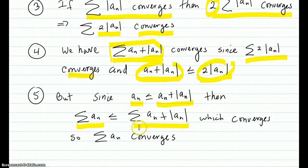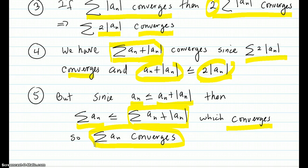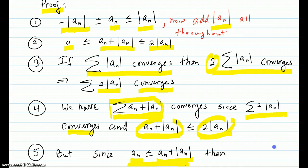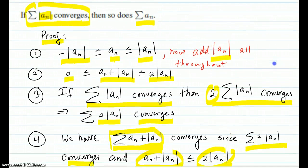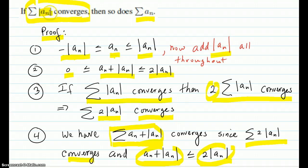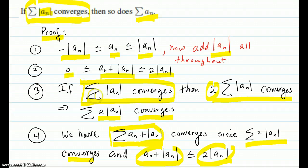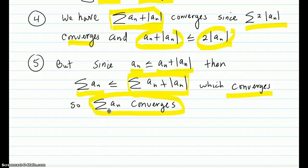By comparison, that means the sum of a_n converges. That proves the theorem: we assumed the series of absolute values of the terms converged, and that led us all the way to the sum of a_n converging. And that proves the theorem.